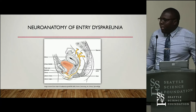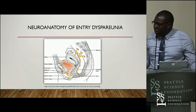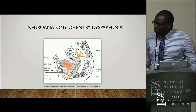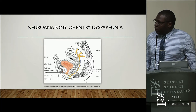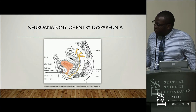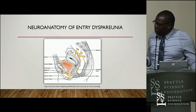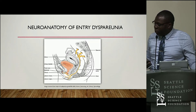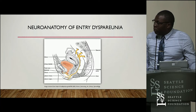Talking about entry dyspareunia, one of the main nerves involved is the pudendal nerve. Entry dyspareunia involves the vulva and entry into the vagina, and it's the pudendal nerve that supplies sensory and nociceptive innervation to that area. As you can see, the pudendal nerve originates from S2, S3, S4, gives an inferior rectal branch to the rectum, passes through the pudendal canal, and provides deep and superficial perineal branches including posterior labial branches that supply the labia. There is also the dorsal nerve of the clitoris. The pudendal nerve plays a big role in this area and has been widely implicated in entry dyspareunia.